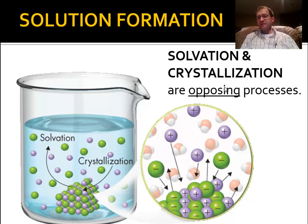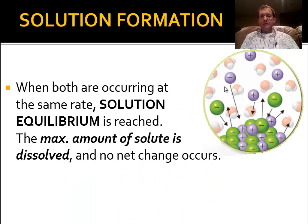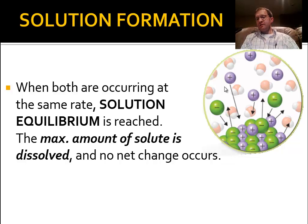Solvation and crystallization kind of cancel each other out — like melting and freezing, or heating and cooling, or oxidation and reduction. When both are happening at the same rate, we've achieved what we call solution equilibrium. At that point there is no net change, because the amount of dissolving is equal to the amount of recrystallizing — solvation equals crystallization.